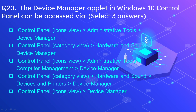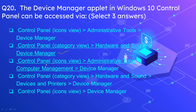Question number 20: The Device Manager applet in Windows 10 control panel can be accessed via — select three answers. The correct options are: via Control Panel category view, then Hardware and Sound, then Device Manager; via Control Panel icon view, then Administrative Tools, then Computer Management, then Device Manager; and via Control Panel icon view, directly to Device Manager.